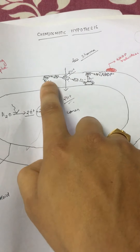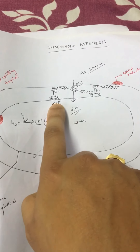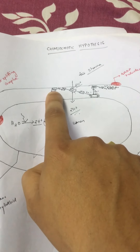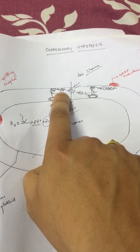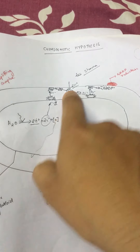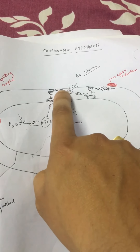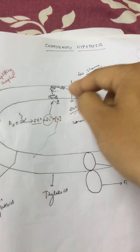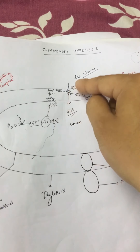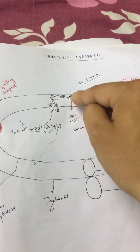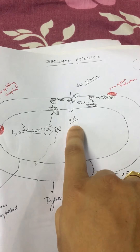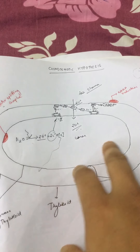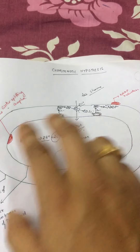In the Z-scheme, when chlorophyll a of PS2 receives sufficient photons, two electrons get excited and are accepted by the primary electron receptor. From there, the two electrons are transferred to plastoquinone, then to the cytochrome complex. When the cytochrome complex receives these two electrons, energy is released, and that energy is used by the cytochrome complex to accept two protons from the stroma and pump them into the lumen of the thylakoid.